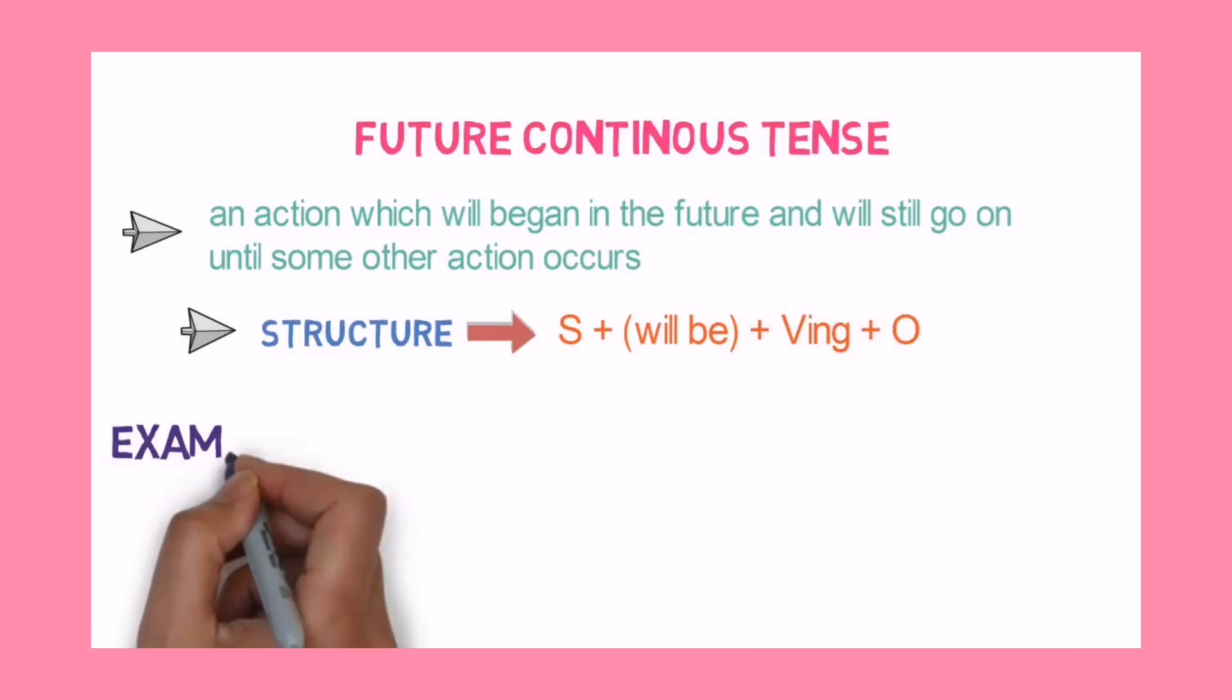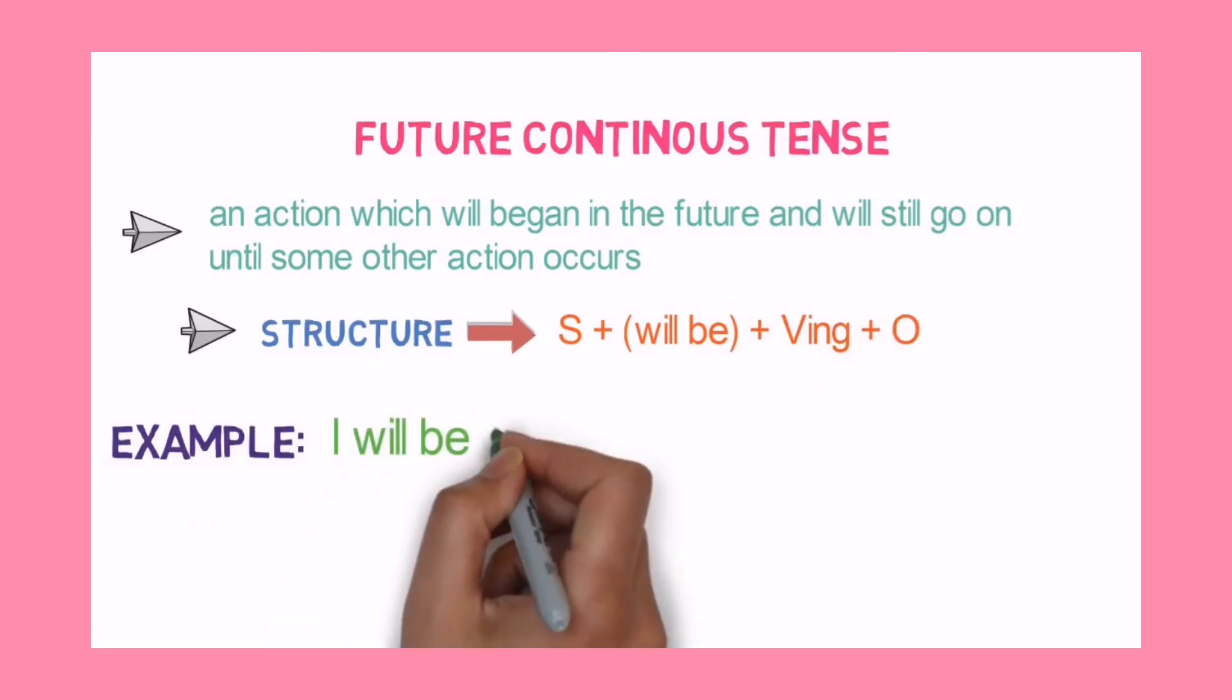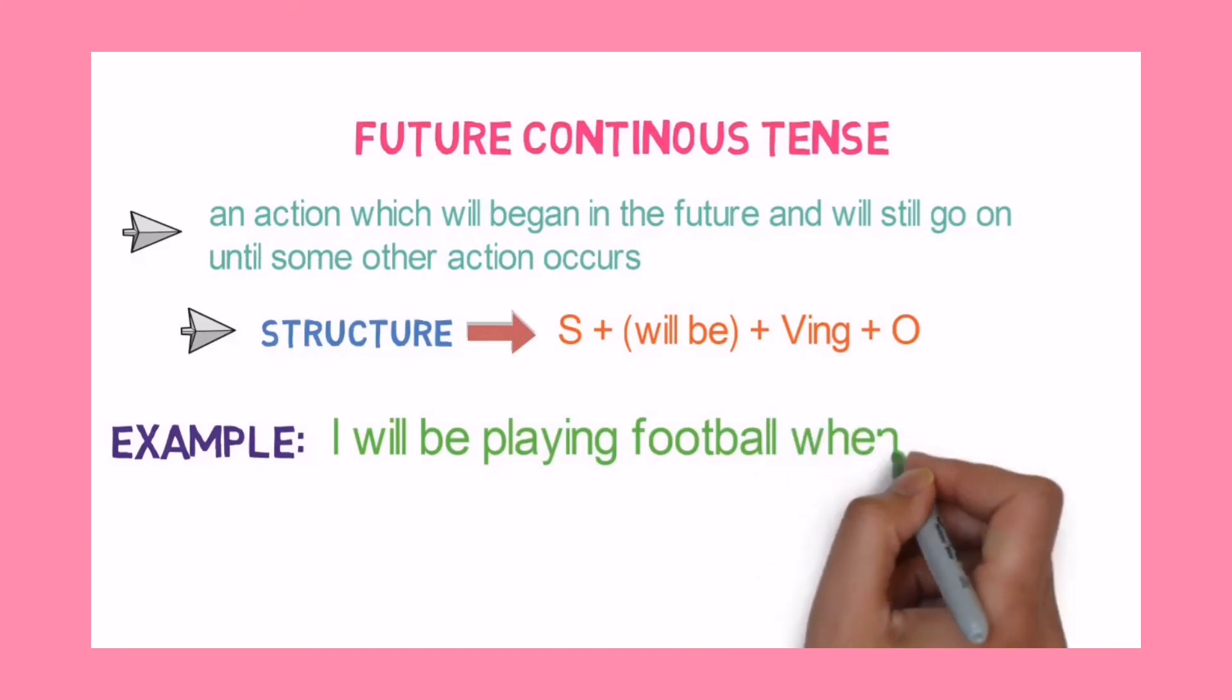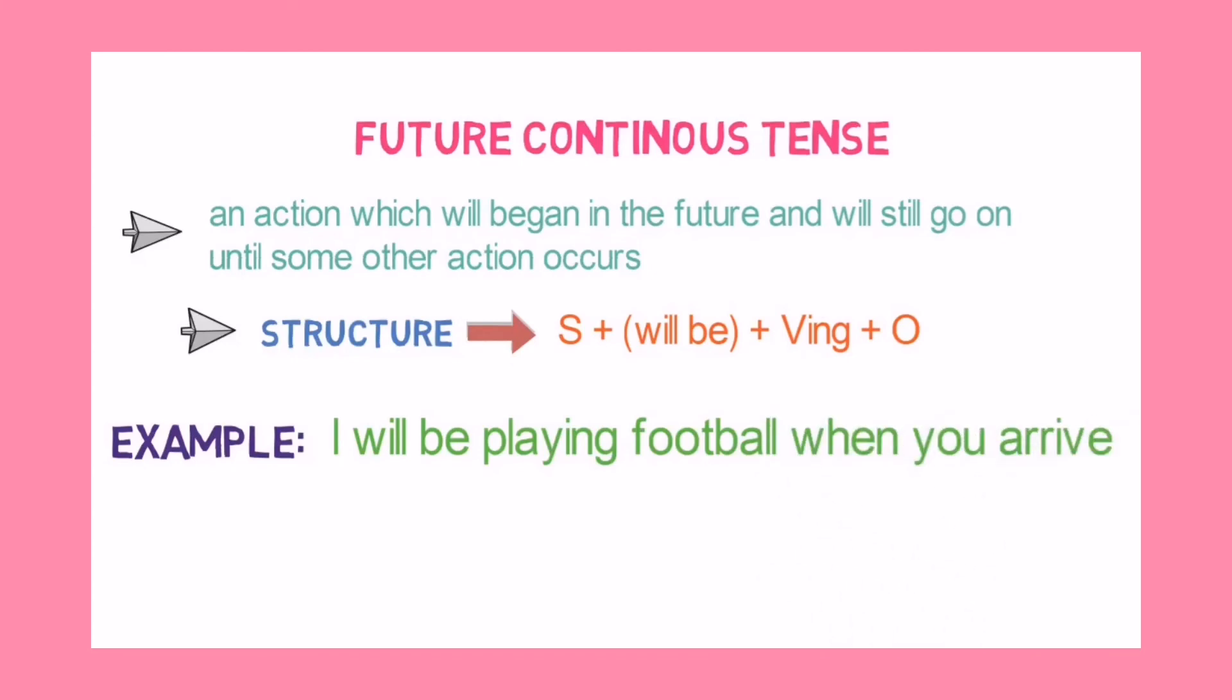For example, I will be playing football when you arrive. Now in this sentence, I am predicting a future action of playing football and it will go on until some another action happens. So let's look into the timeline.